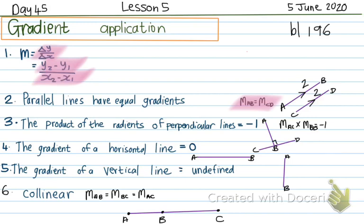Number 3: the product of the gradients of perpendicular lines is equal to negative 1. So if I have two lines that are perpendicular to one another, the gradient of AB multiplied with the gradient of CD will give an answer of negative 1. For instance, if the one gradient is a half, then the other gradient will be negative 2, and the answer will be negative 1. If the one gradient is 3, then the other gradient will be negative — because if the one is positive, the other should be negative — and I switch the fraction around to get the reciprocal, so it becomes negative a third.